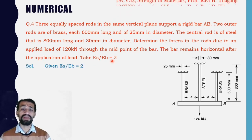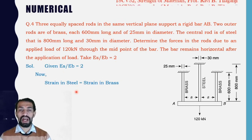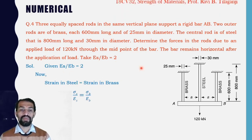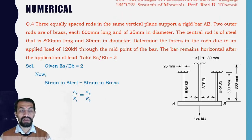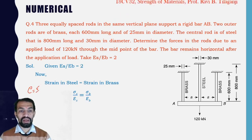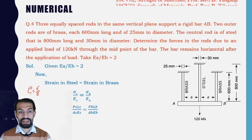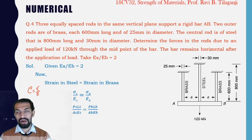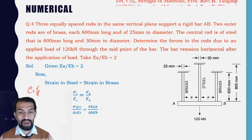Given Es/Eb = 2. Strain in steel equals strain in brass. We know strain is sigma divided by E. Substituting: change in length equals P*L divided by A*E. So Ps*Ls divided by As*Es equals Pb*Lb divided by Ab*Eb. This is the change in length formula, and now we equate and cross-multiply.